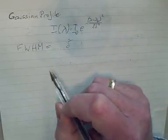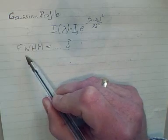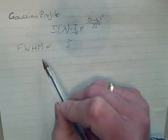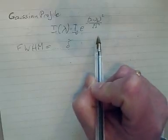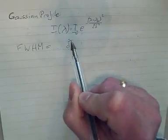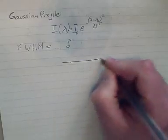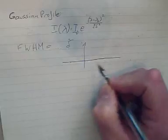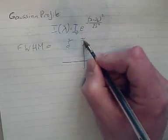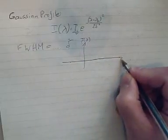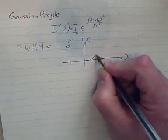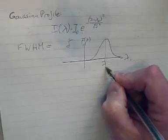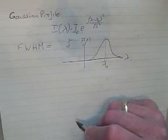What we need to do is calculate where this line profile has its half maximum values. If you roughly know how a Gaussian profile looks like, you can easily sketch that. You will have, in this case, intensity against lambda, and the Gaussian profile will look something like this, with its peak at lambda zero.